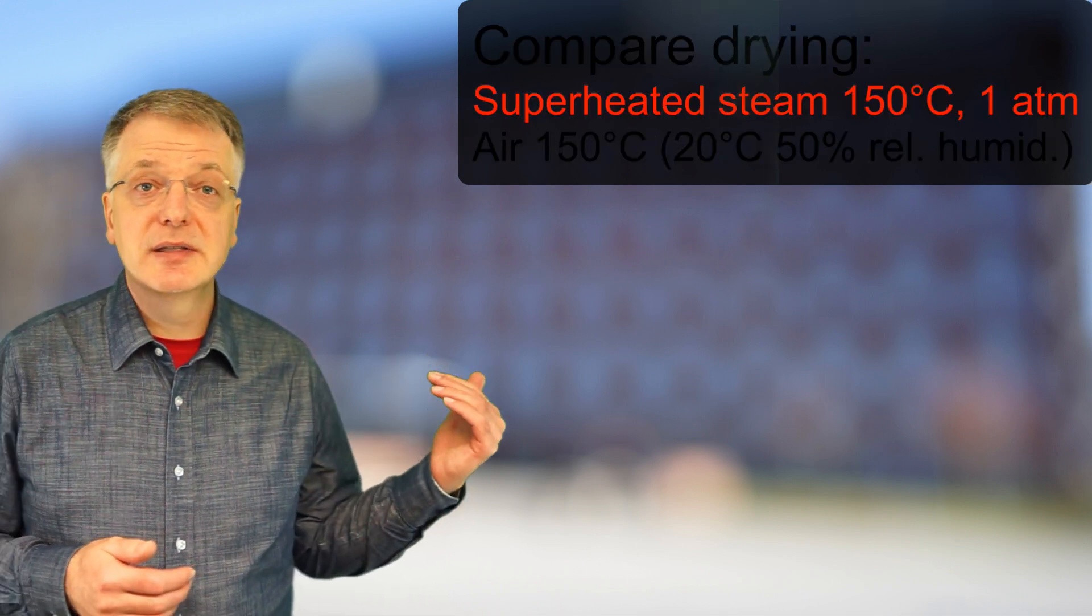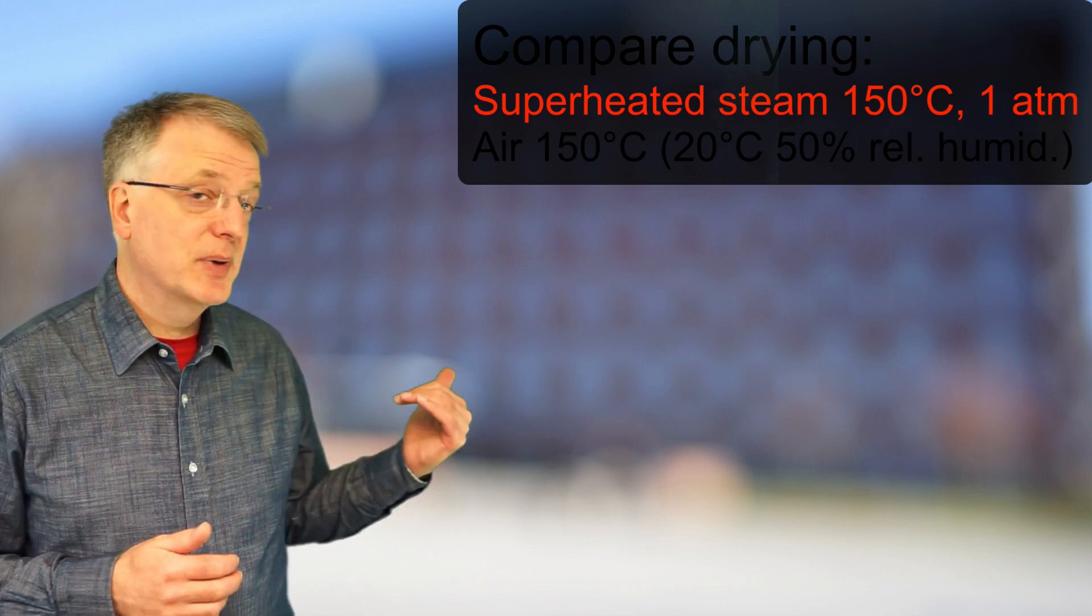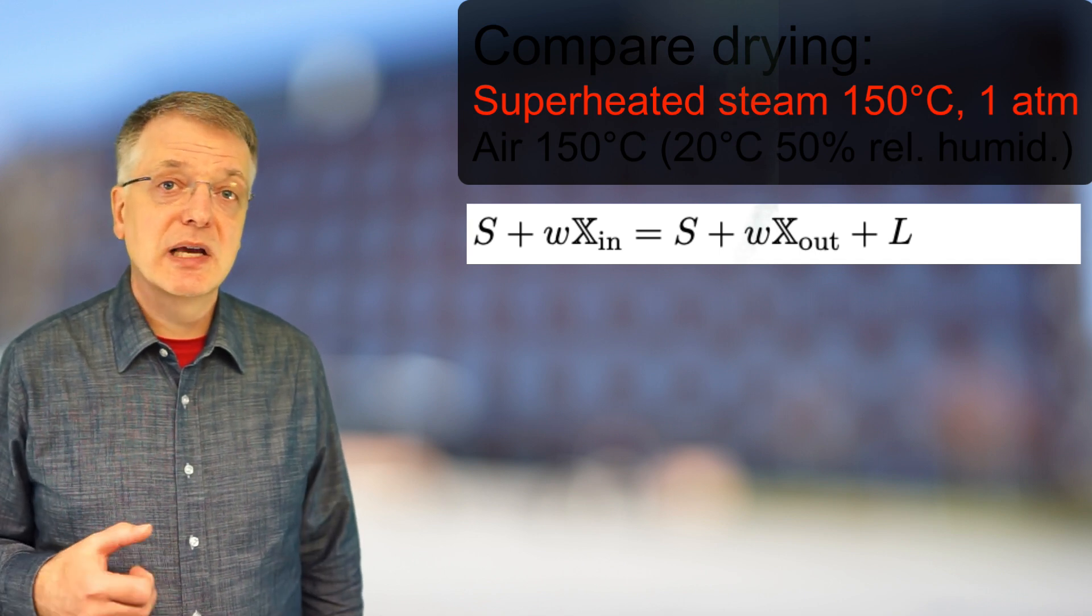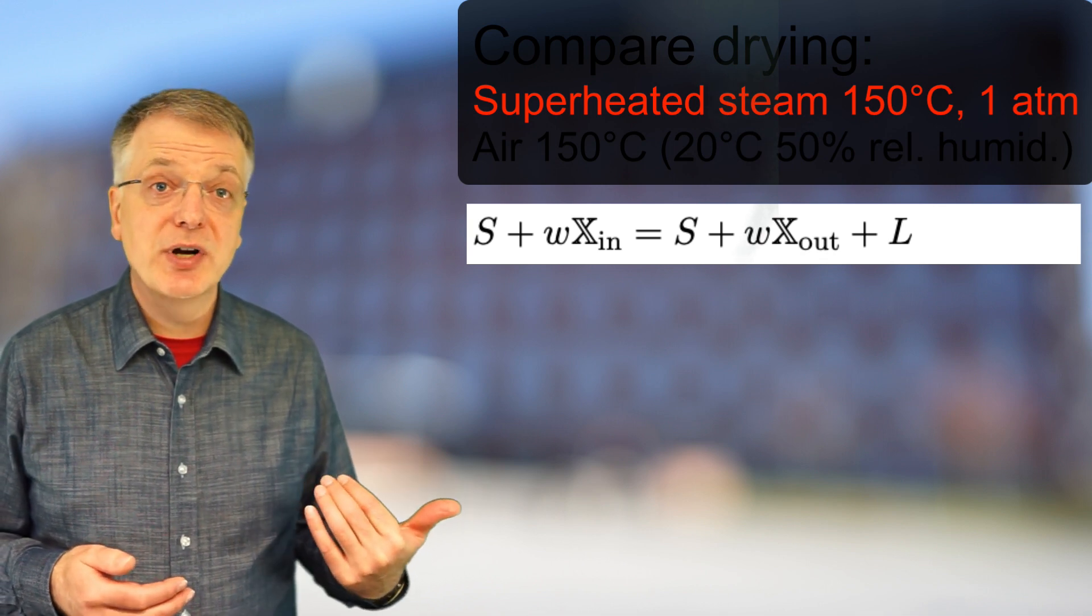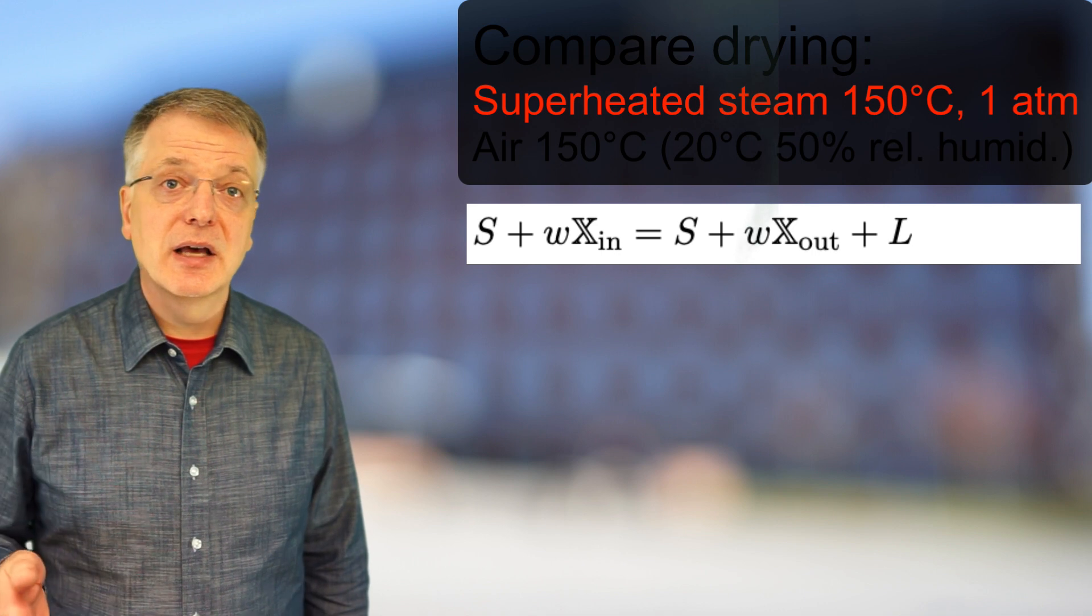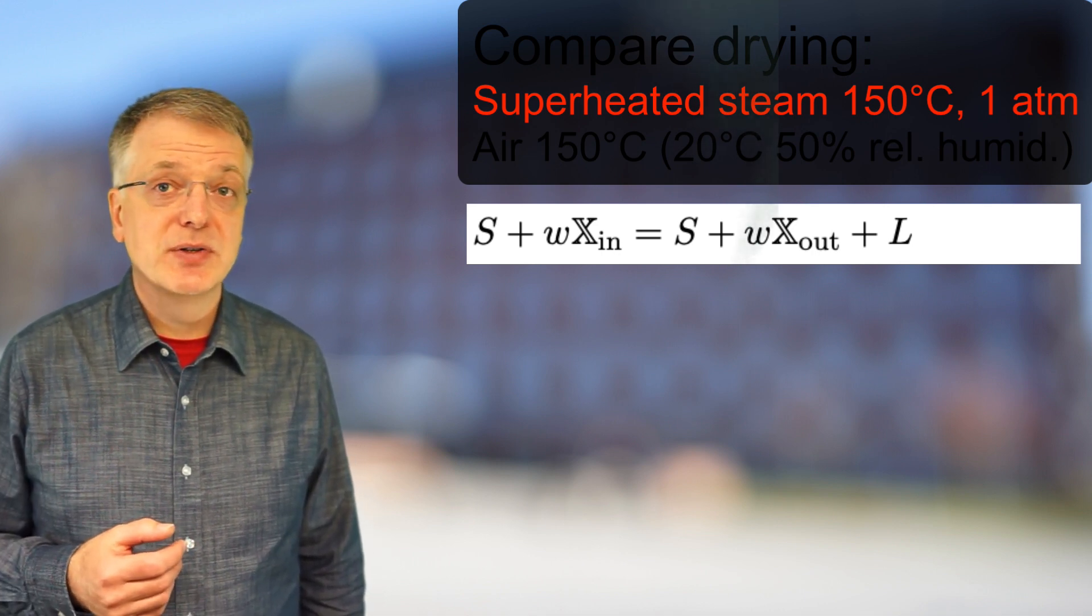In drying with superheated steam, the mass balance becomes S plus W times X in equals S plus W times X out plus L, where W is the mass flow of drying goods, X is the water content of the material, and L the amount of liquid water evaporated per second.